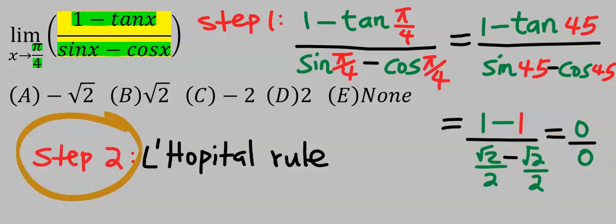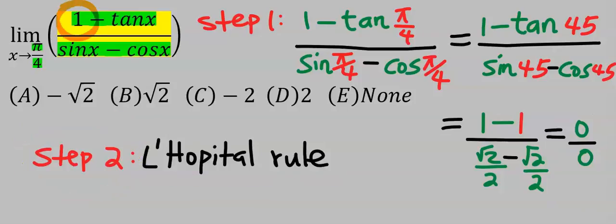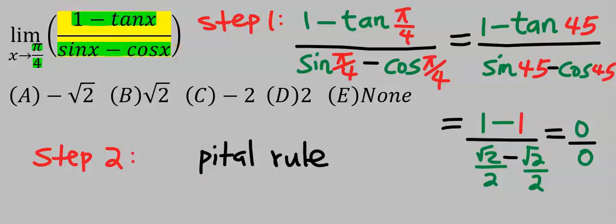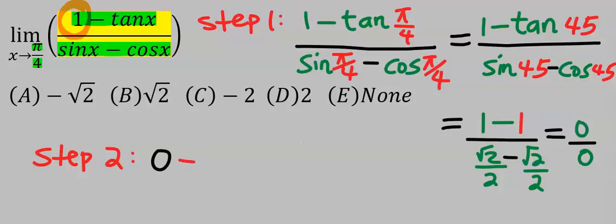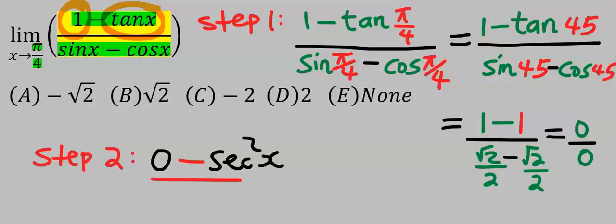Step two, we are going to apply L'Hôpital's rule and differentiate each term separately. Differentiating the constant 1 gives 0. Next, differentiating tan x gives sec²x. Then differentiating sin x gives cos x.